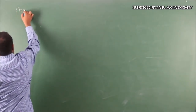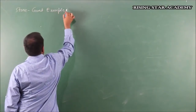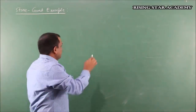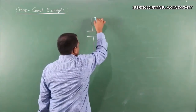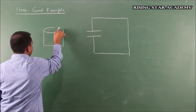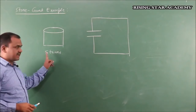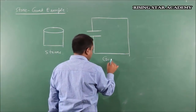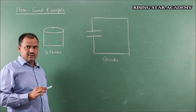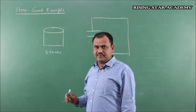Now I am discussing the stone-goat example. Many authors write about tribals who used stones to count their goats. This is a hypothetical situation used by many mathematics authors to clarify the concept of a one-one onto function or one-one correspondence.